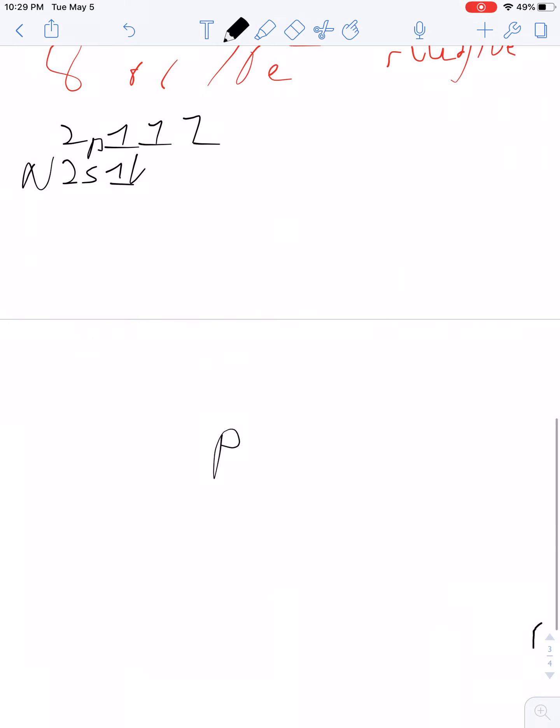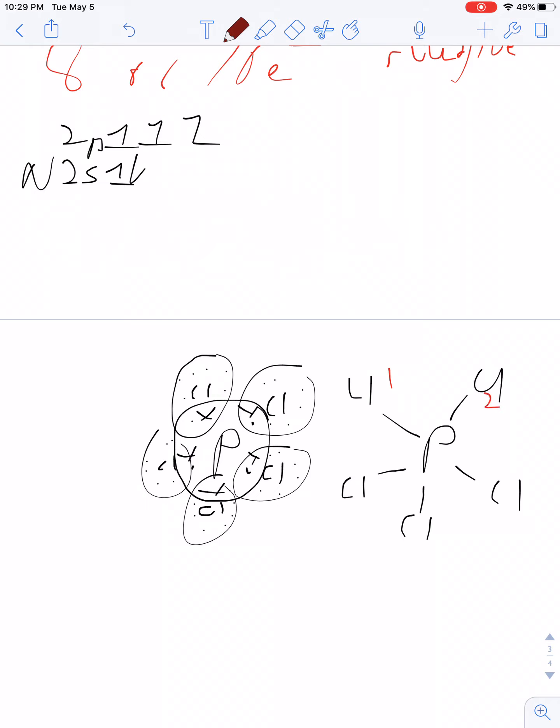Okay? So, PCl5 would look something like this. So 8, 8, 8, 8, 8. The phosphorus would have 10. And then count up the number of things that are attached to it. 1, 2, 3, 4, 5. So now, I'd say, okay, I've got 1s.